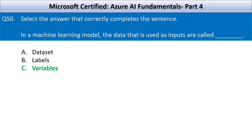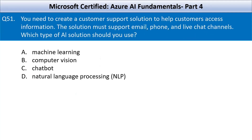Question number 51: you need to create a customer support solution to help customers access information. The solution must support email, phone, and live chat channels. Which type of AI solution should you use? Your options are machine learning, computer vision, chatbot, and natural language processing.